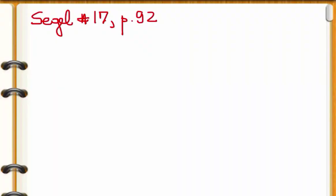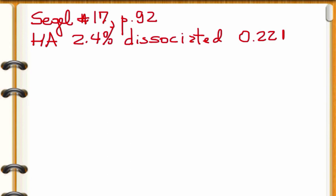Let's solve some problems from Seagull's biochemical calculations. Let's start with page number 92, problem 17. The problem is the weak acid HA is 2.4% dissociated in a 0.22 molar solution.